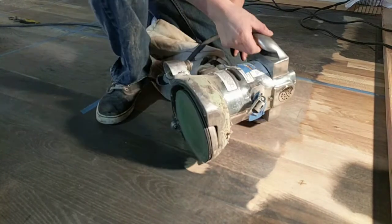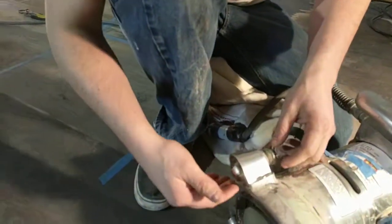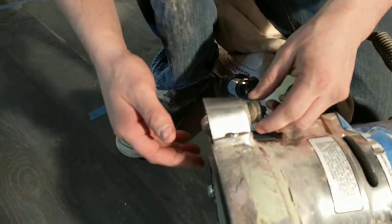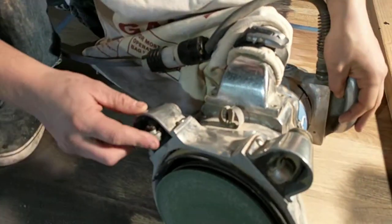So first things first would be to adjust the wheels. We can see that this is really high, so that's really low for the wheel right here. And we can see on the other side that this one's really high.